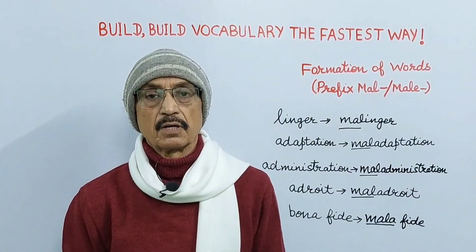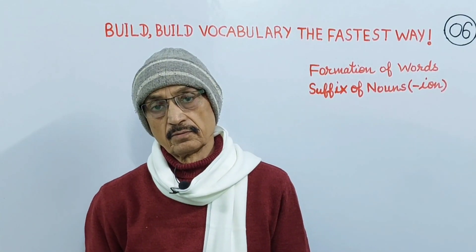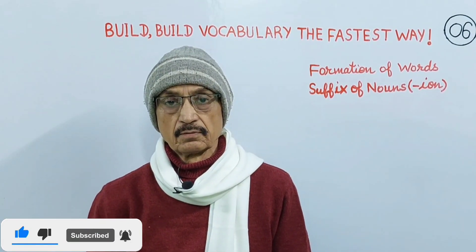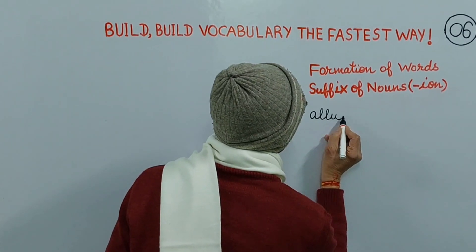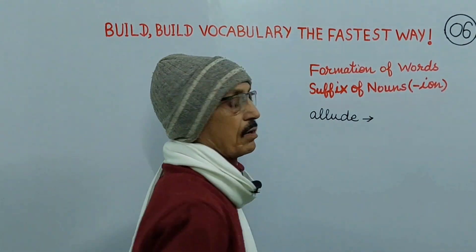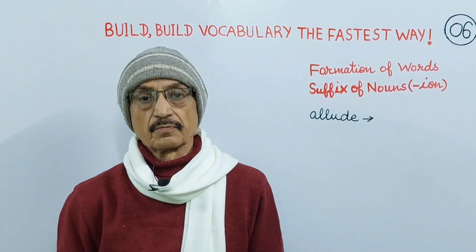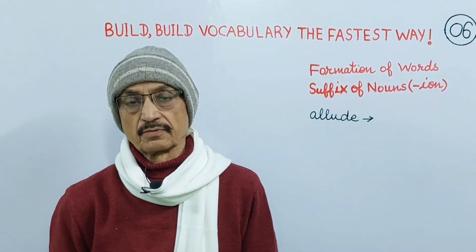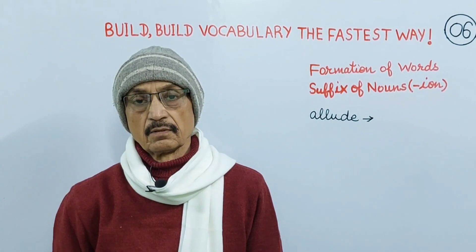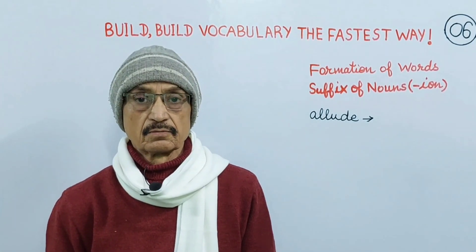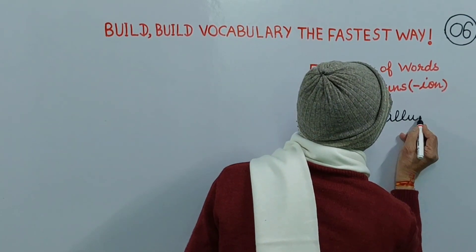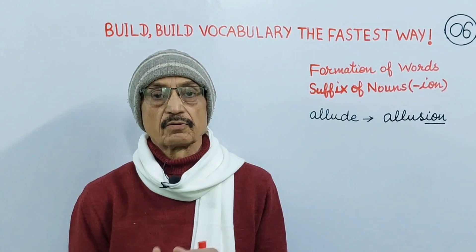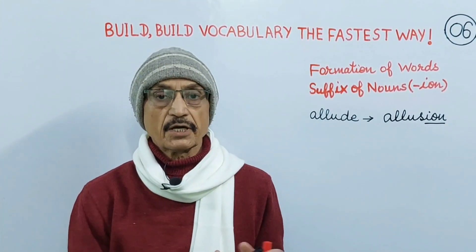I will now tell you the suffix of nouns, I-O-N. The first word is allude. When we add suffix I-O-N, it becomes a noun — allusion. Allusion means reference, suggestion, indication, hint.